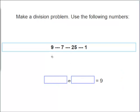Let's make another division problem. Now we need to come up with one that equals 9. So we have the numbers 9, 7, 25, and 1. Which two would you pick to equal 9? Yes, 9 divided by 1 equals 9.